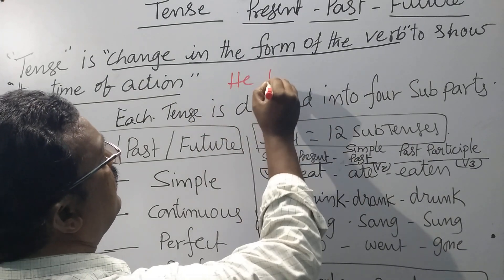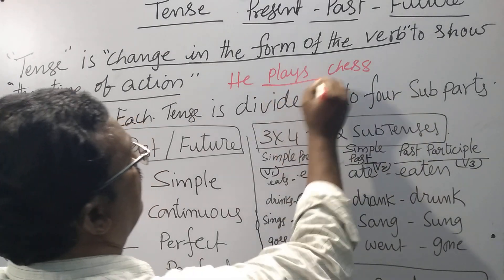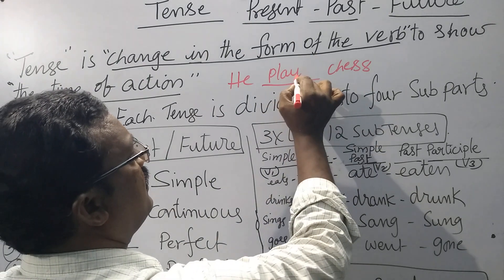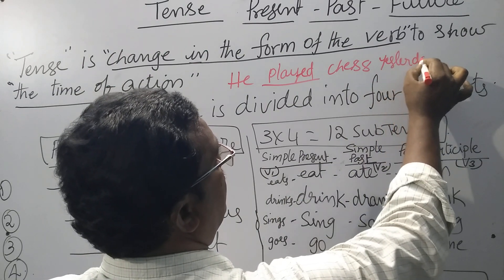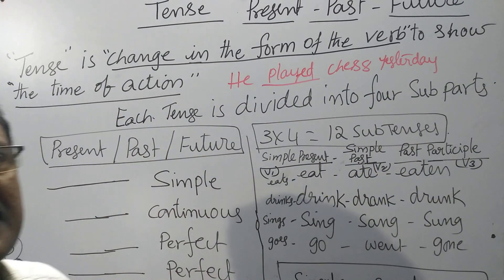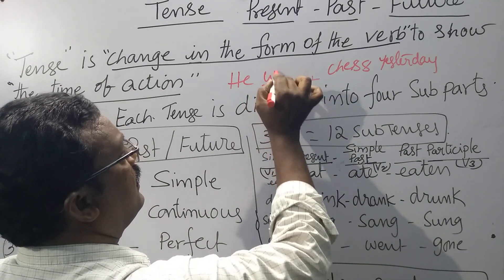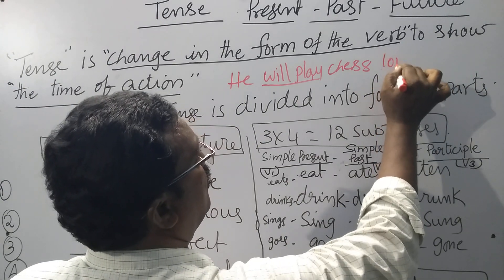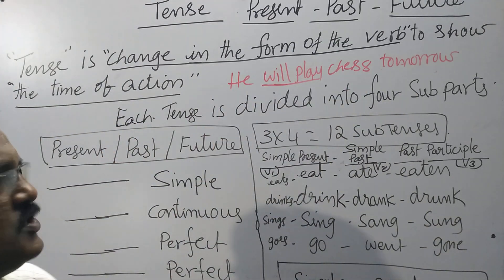For example, he plays chess — this verb represents simple present tense. For example, he played chess yesterday — it expresses simple past. For example, he will play chess tomorrow.